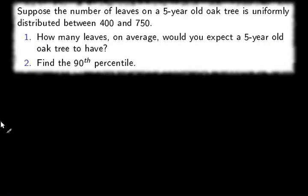Suppose the number of leaves on a five-year-old oak tree is uniformly distributed between 400 and 750. Number one, how many leaves on average would you expect a five-year-old oak tree to have?